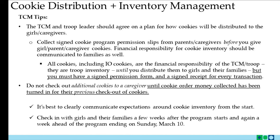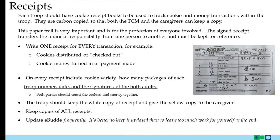Communicating expectations to girls and their parents or caregivers and checking in with families about how many cookies they have or need is key to good inventory management. Another important factor are receipts. Each troop should have received cookie receipt books to track cookie and money transactions within the troop. They're carbon copied so that both the TCM and the caregivers can keep a copy. This paper trail is really important and is for the protection of everyone involved.